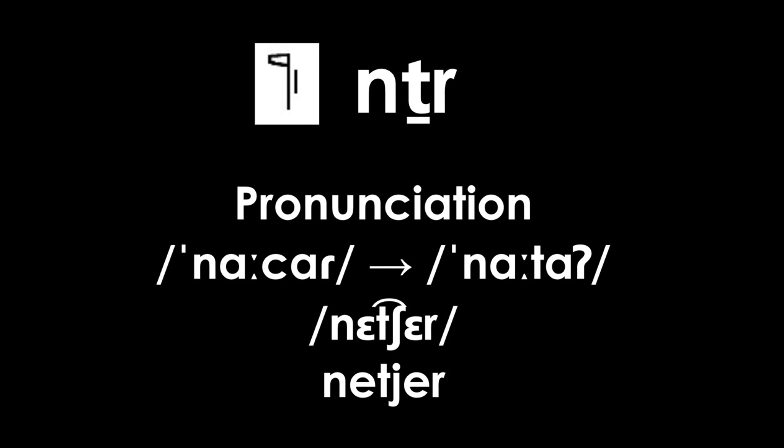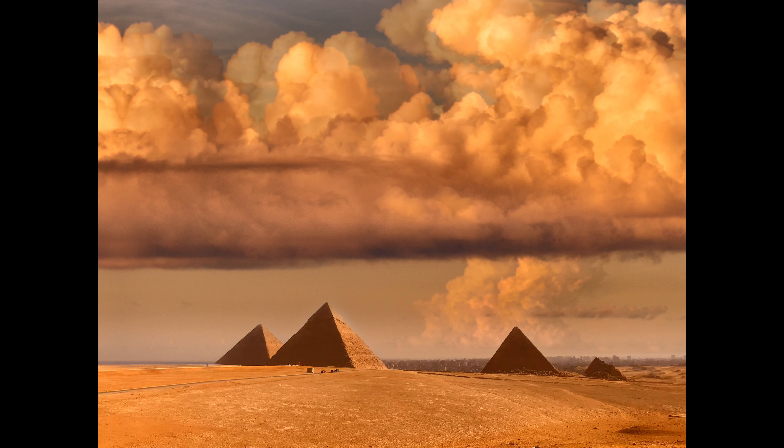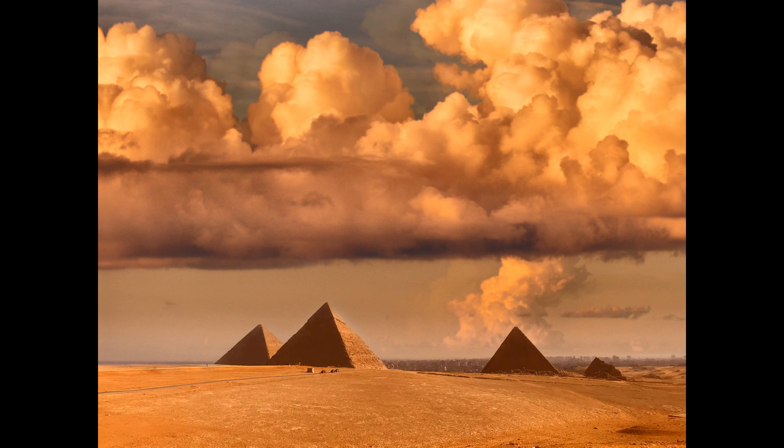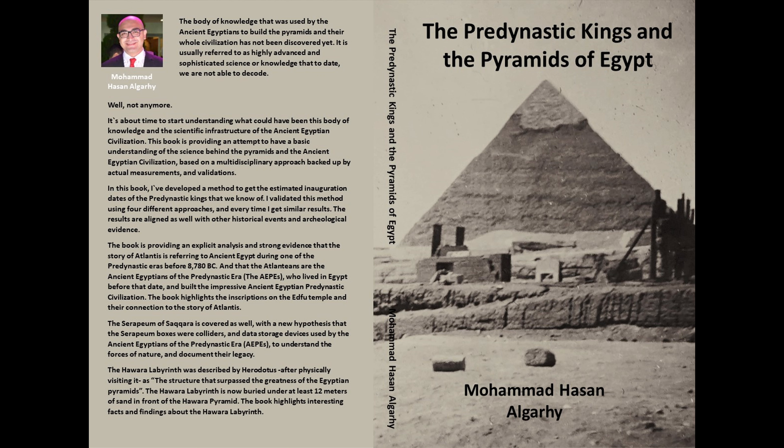By understanding how the ancient Egyptians used the word NTR and how it evolved, it becomes clear that it doesn't merely mean 'god.' It basically means 'connected to the forces of nature' or 'connected to divinity.' The book The Predynastic Kings and the Pyramids of Egypt discusses this concept in detail, confirming that the pre-dynastic kings mentioned on the Turin list were not gods — they were kings connected to the forces of nature, or in modern terminology, those with a very good understanding and control of the laws of physics.